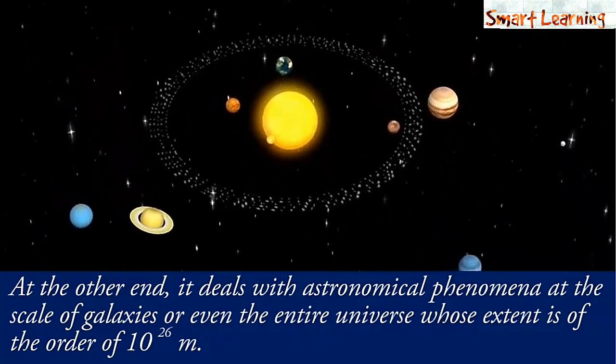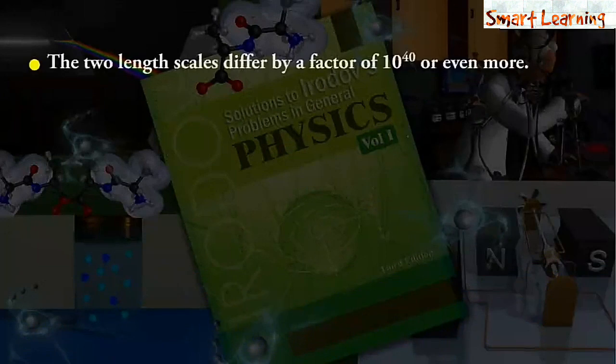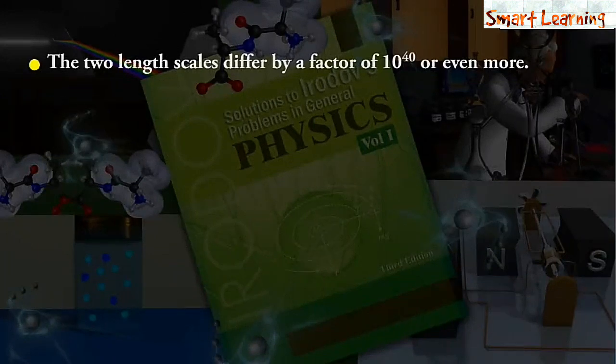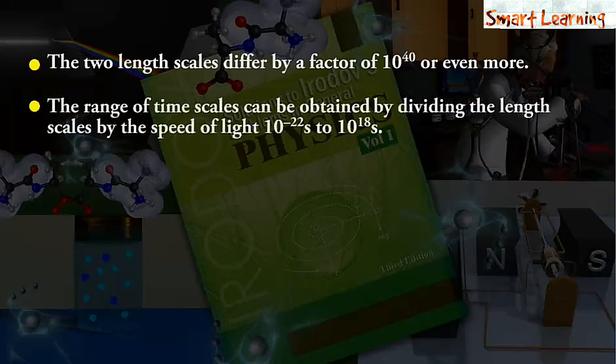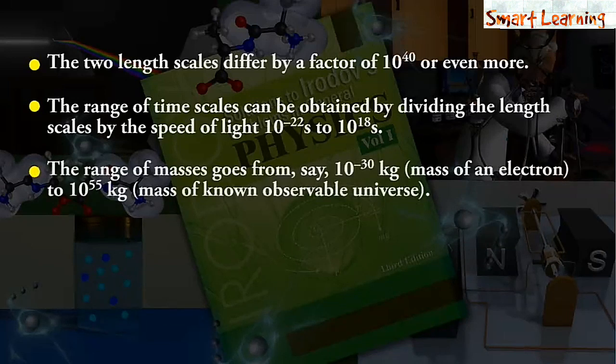At the other end, it deals with astronomical phenomena at the scale of galaxies or even the entire universe whose extent is of the order 10 raised to the power 26 meters. The two length scales differ by a factor of 10 raised to the power 40 or even more. The range of time scales can be obtained by dividing the length scales by the speed of light, that is 10 raised to the power minus 22 second to 10 raised to the power 18 seconds. The range of masses goes from say 10 raised to the power minus 30 kg mass of an electron to 10 raised to the power 55 kg, that is mass of known observable universe.